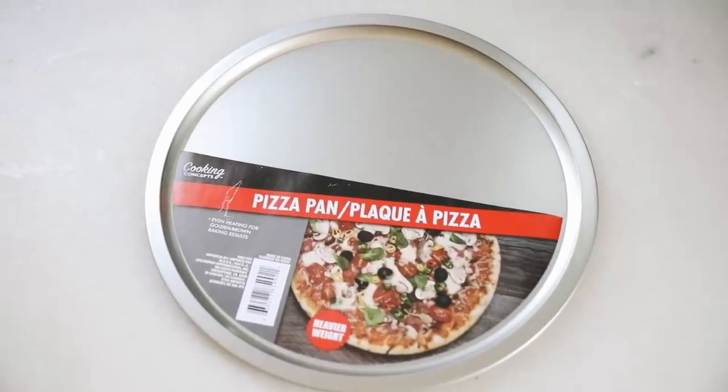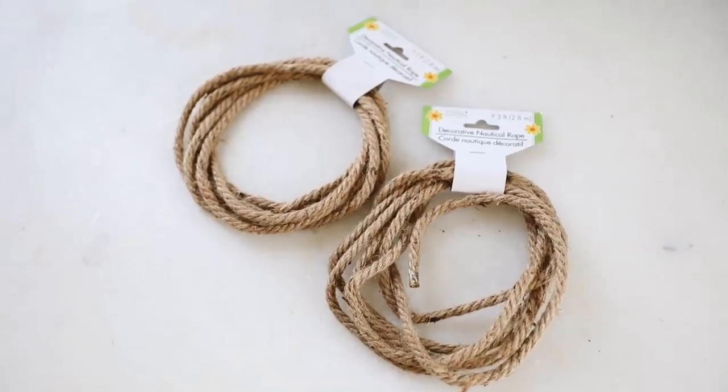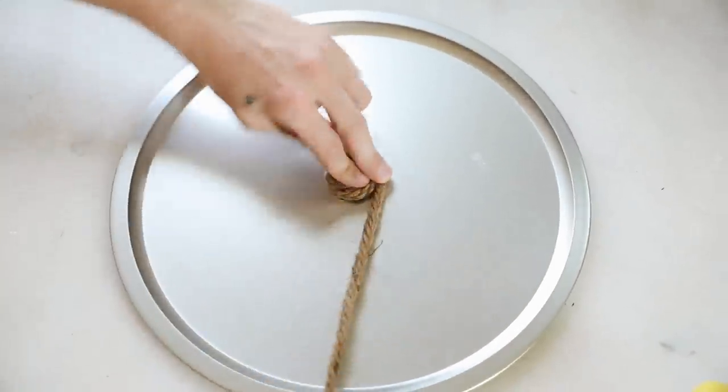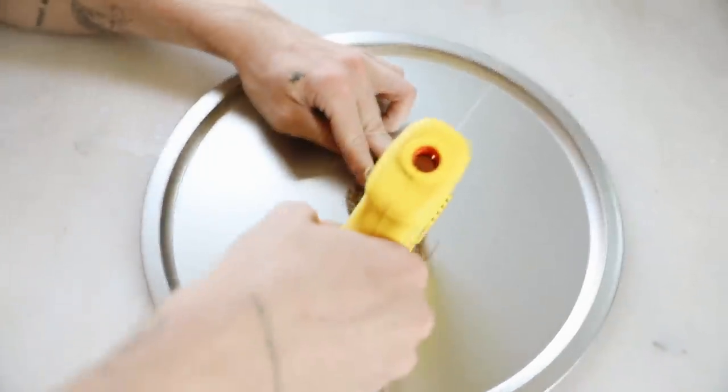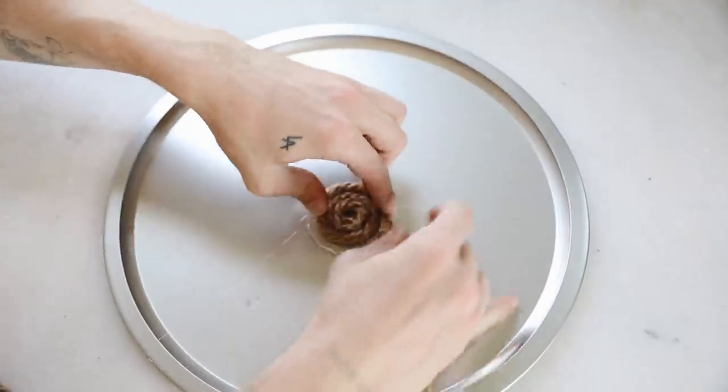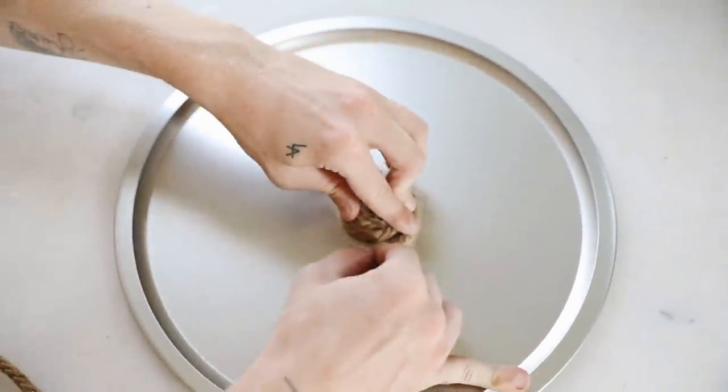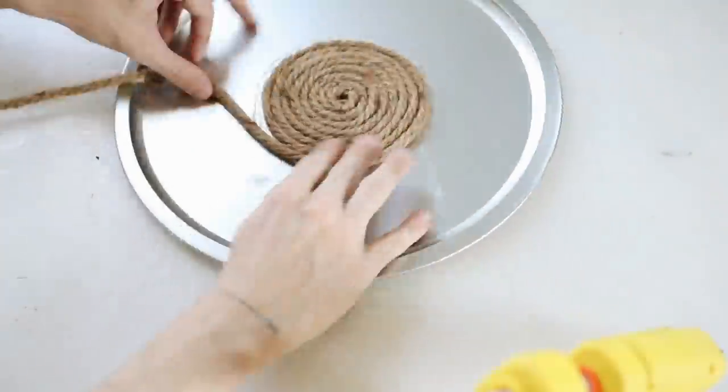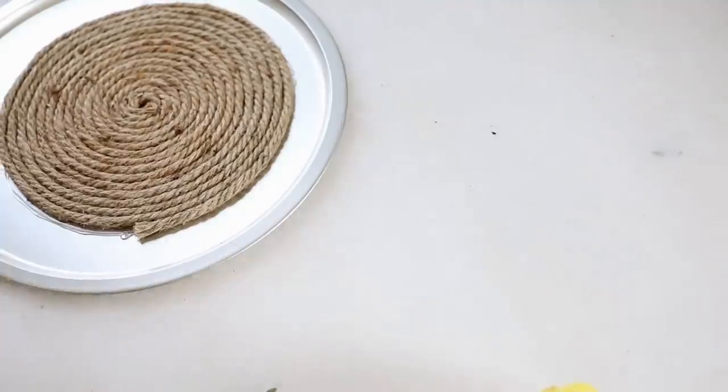I had to save my favorite project for last. This has to be one of my favorite dollar tree hacks I have ever seen. We're starting off with a pizza pan and some of this nautical rope, both of which was found at the dollar store. We are going to be spiraling the rope around the entire pizza pan until it is fully covered. So we're essentially using it as the base for our tray.